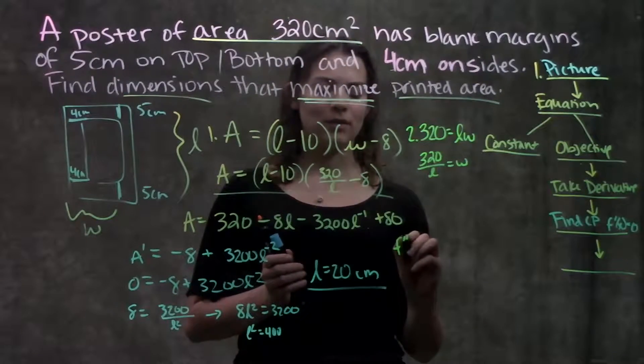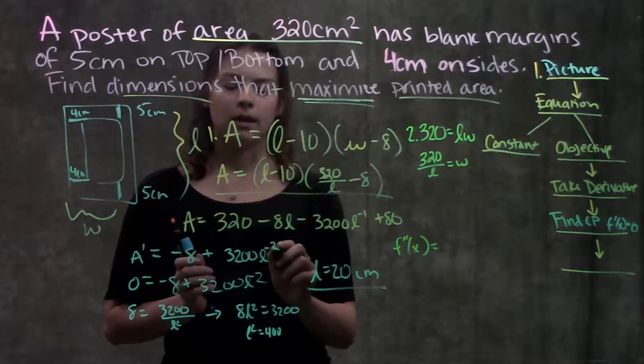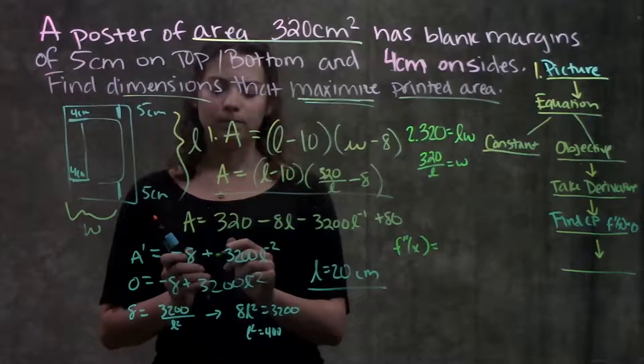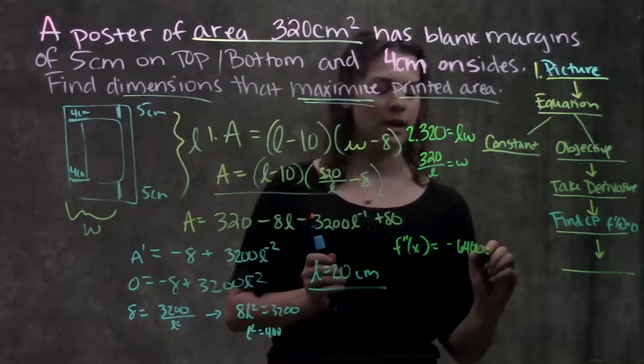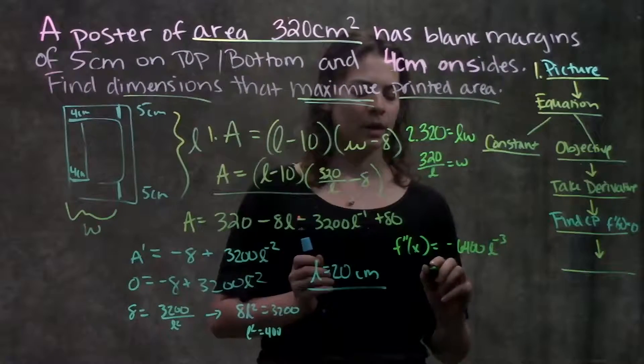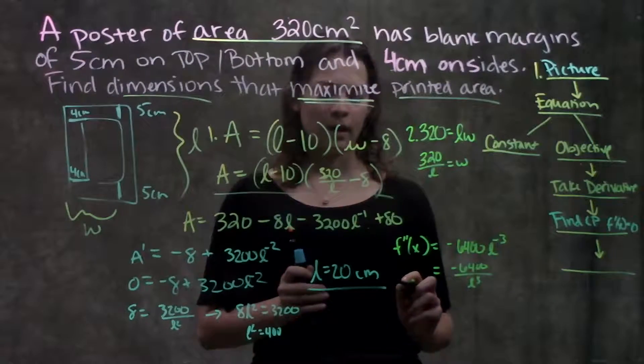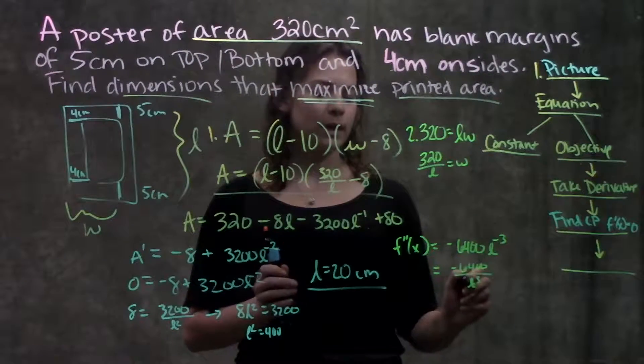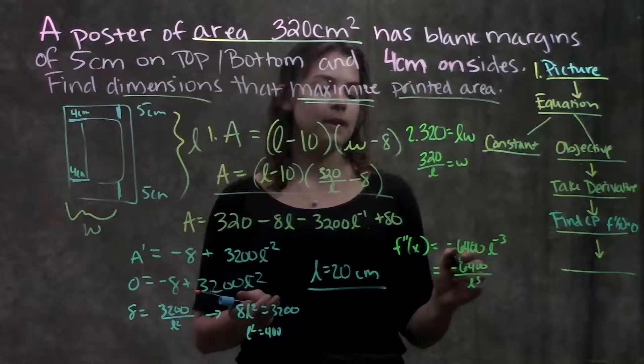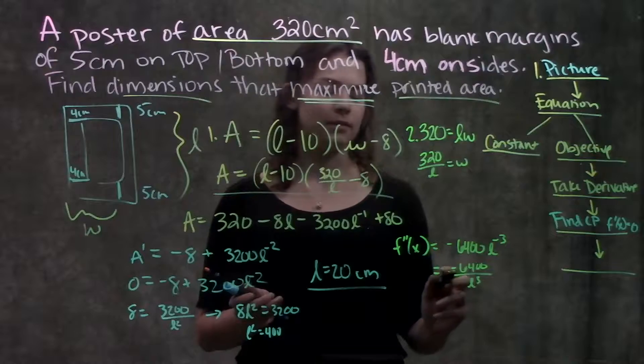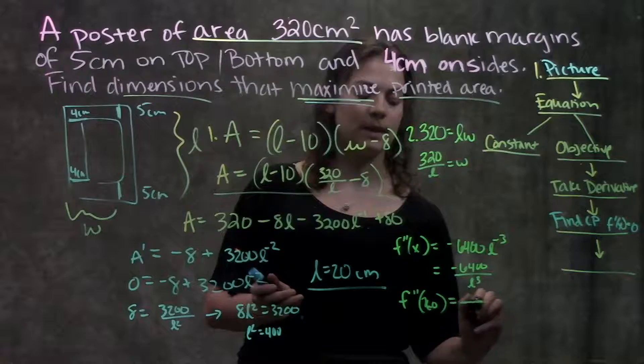So now my second derivative is negative 8, that becomes 0. Here I bring the negative exponent down, and this will become negative 6400 L to the minus 3, or just negative 6400 over L cubed. Alright, if I were to plug in my 20 here, it doesn't matter what this number actually is, because some negative divided by some positive, so that means that F double prime of 20 is going to be negative.